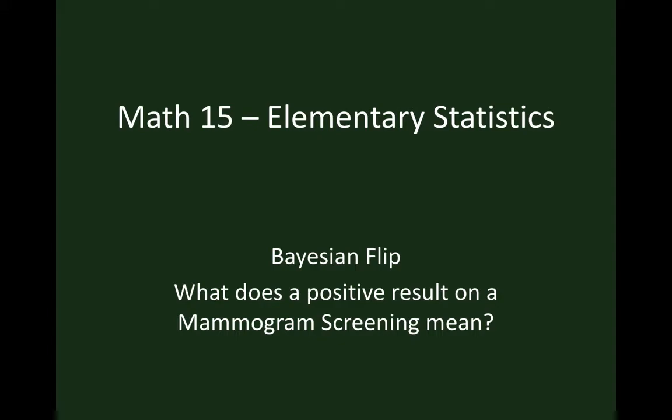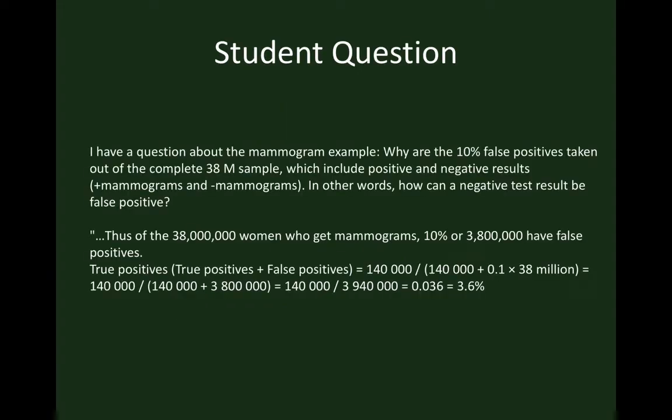I'm making this video in response to a student question I received recently. Here's the question. I have a question about the mammogram example. Why are the 10% false positives taken out of the complete 38 million sample, which includes positive and negative results? In other words, how can a negative test result be false positive?